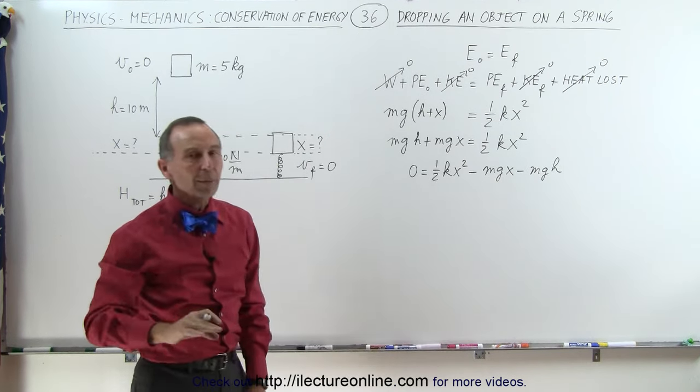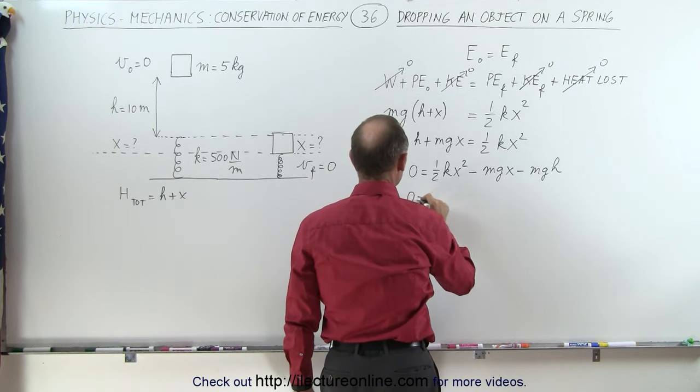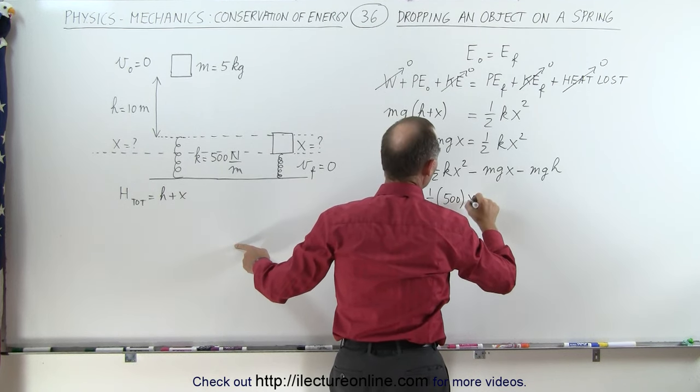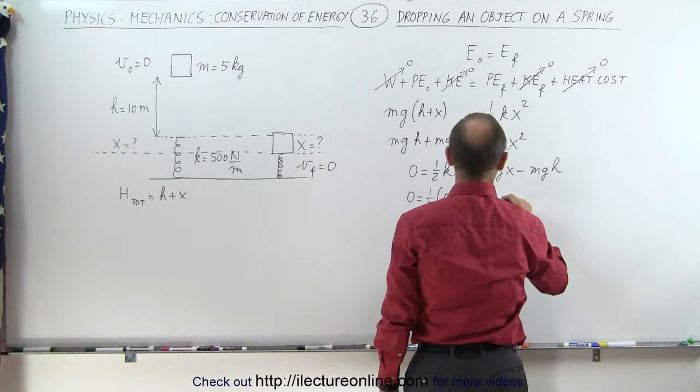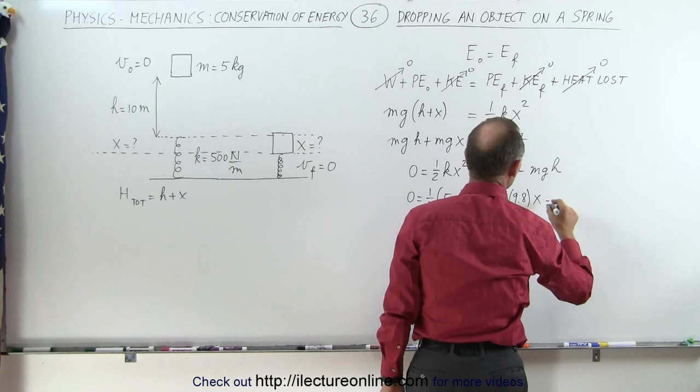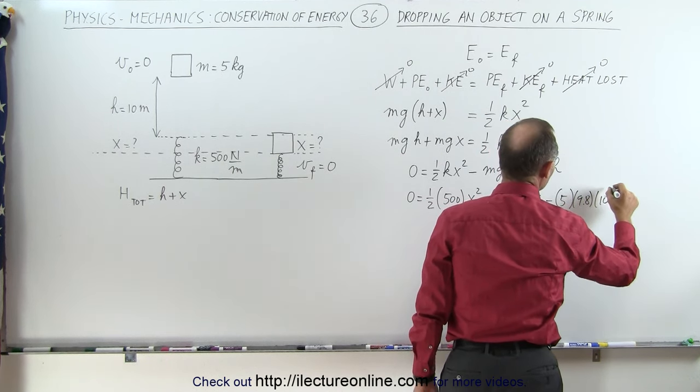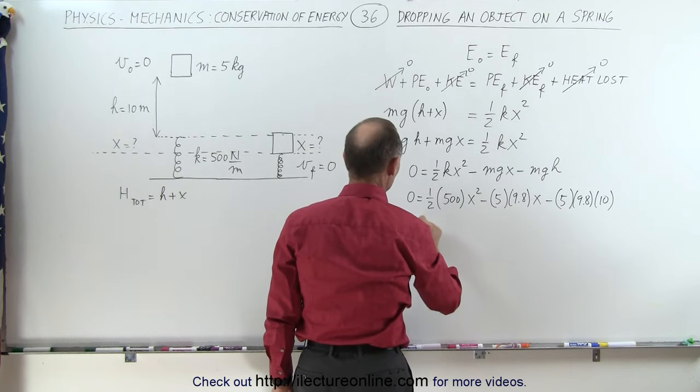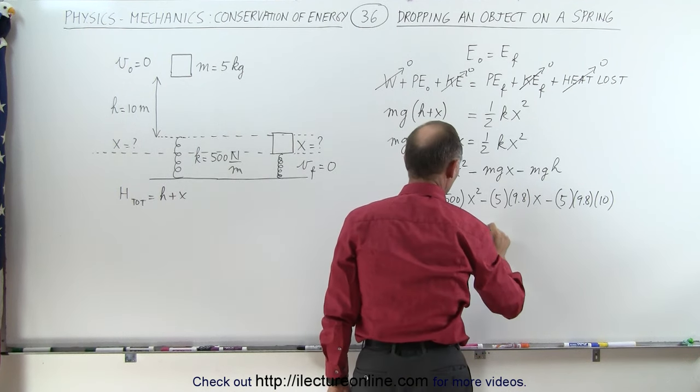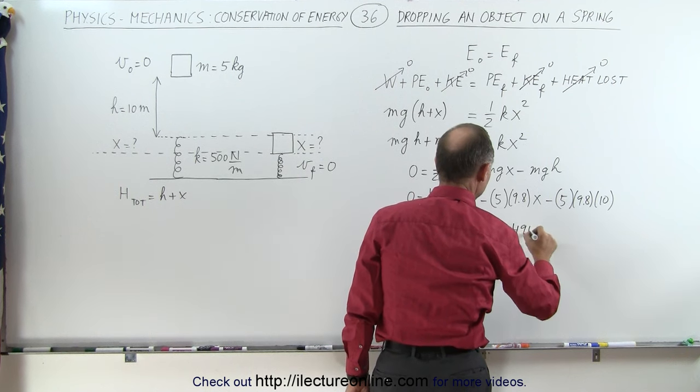Now let's plug in the numbers so we can actually solve that quadratic equation. We'll end up with zero equals one-half times k which is 500 times x squared minus m, m is 5, g is 9.8 times x minus m which is 5, g 9.8, and h is equal to 10. So simplifying that we get zero is equal to 250x squared minus 49x minus 490.